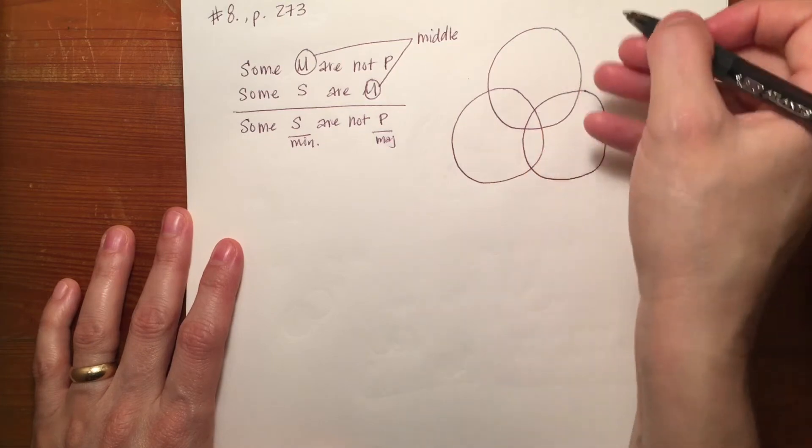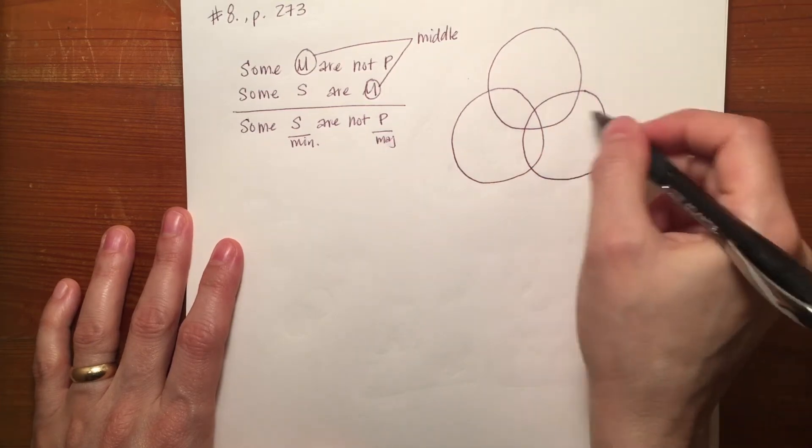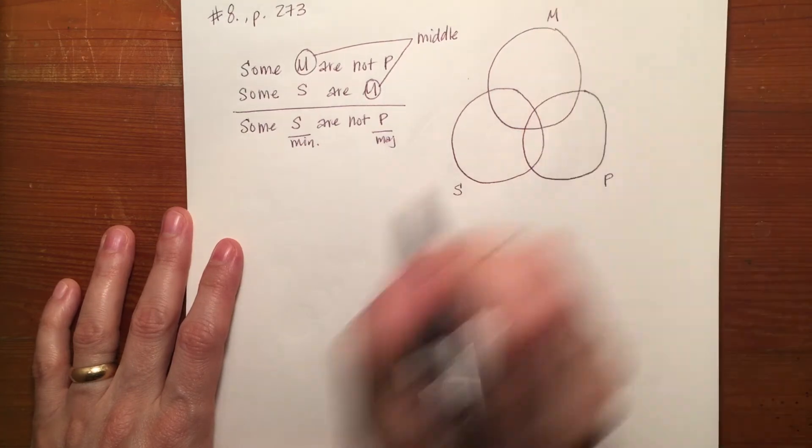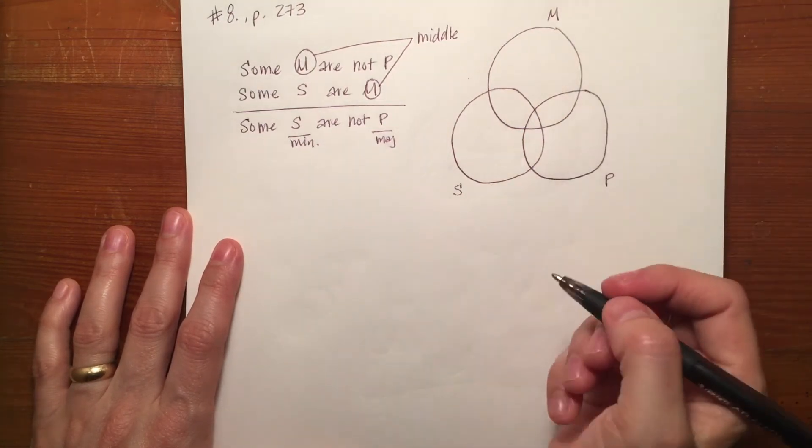But they will always be in the same place. The major term will always be represented by this circle, the minor term this circle, and the middle term this circle. Again they've just made it easy for you.